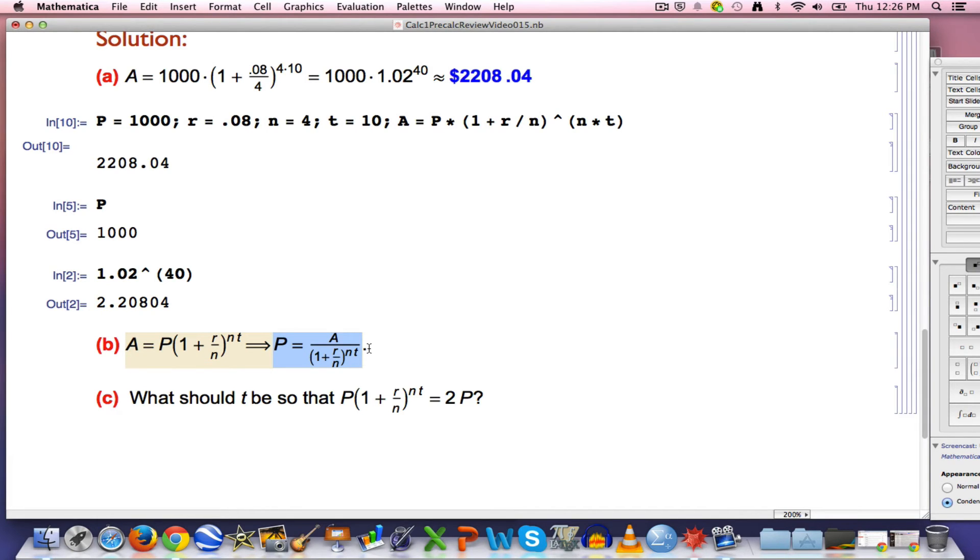Just divide both sides by 1 plus R over N to the NT power to get this equation. Again, thinking of R, N, and T as fixed, this equation defines P as a function of A. And I can use it to solve part B.